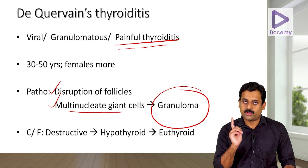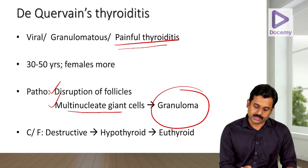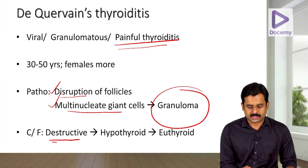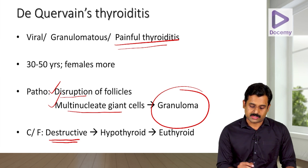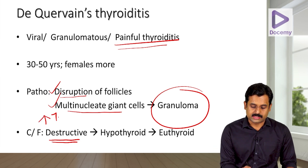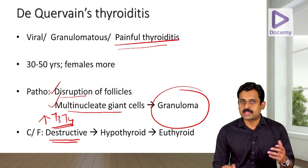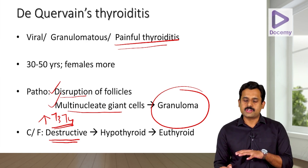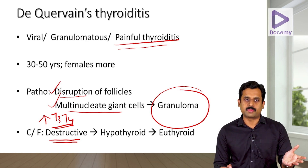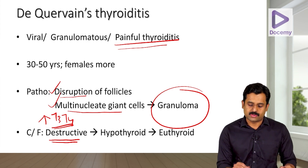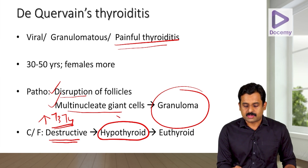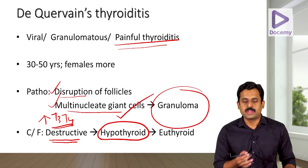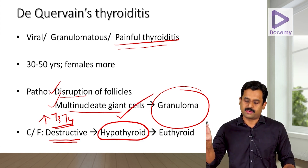The clinical features follow phases. In the destructive phase, disruption of thyroid follicles releases all stored thyroid hormones, increasing T3 and T4, leading to symptoms of hyperthyroidism. Once stored hormones are depleted, the patient enters a hypothyroid phase. Eventually the gland recovers and the patient becomes euthyroid.